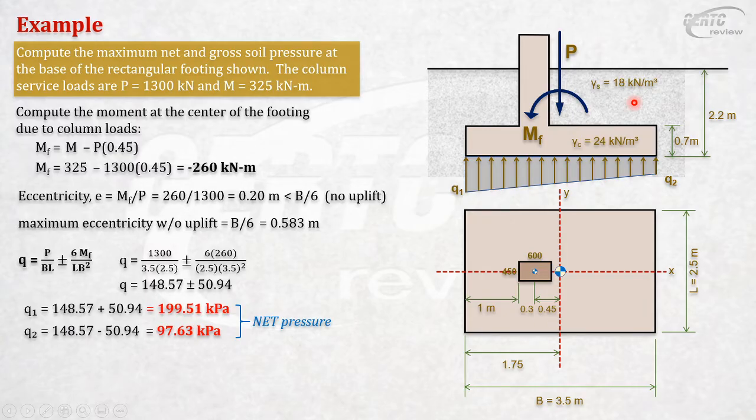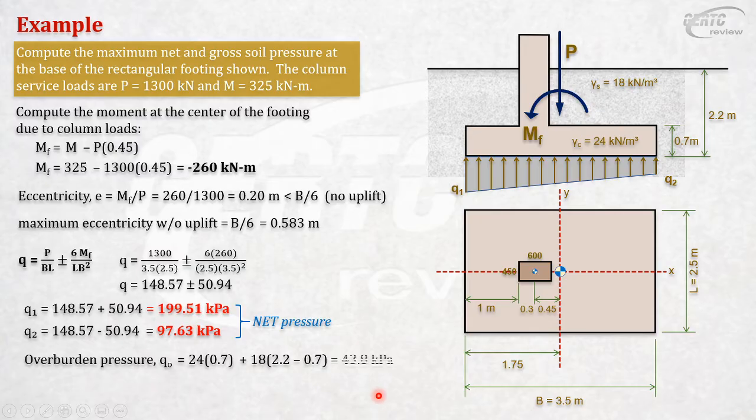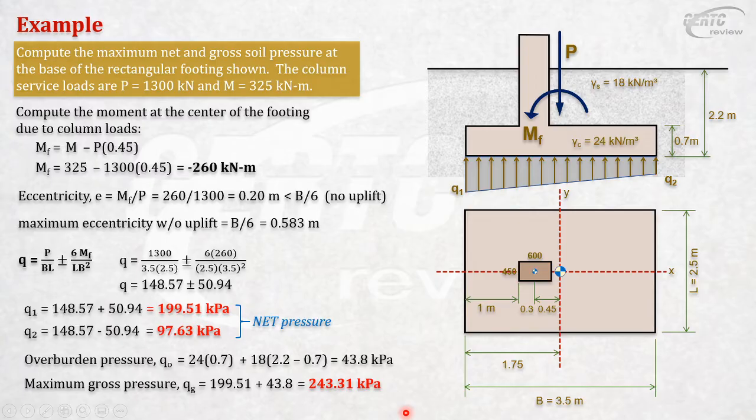How do you get the gross pressure? That's net pressure. To get gross, just add the overburden - the weight of all materials above that layer. The overburden pressure qo equals pressure due to concrete plus pressure due to soil: 24(0.7) + 18(2.2 - 0.7). Add this to the net. For maximum: 199 plus overburden equals 243.31 kilopascals.